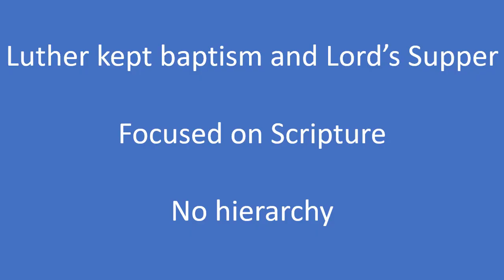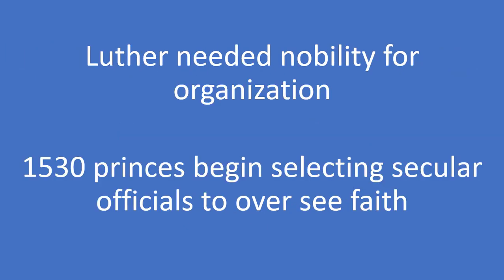Luther kept only two sacraments — baptism and the Lord's Supper — and scrapped many of the traditions of the Catholic Church, putting the focus of his new Reformed Church on reading scripture. He also rejected any sort of church hierarchy, arguing that was a Catholic practice not needed in his new church. Luther envisioned a community of equal believers, all of whom could read and interpret the Bible for themselves. Because he refused to create an ecclesiastical hierarchy, the maintenance of the church fell to the nobility. Luther sided with the nobility in the German Peasants' War in part because his new church did need structure and some form of leadership to maintain discipline.